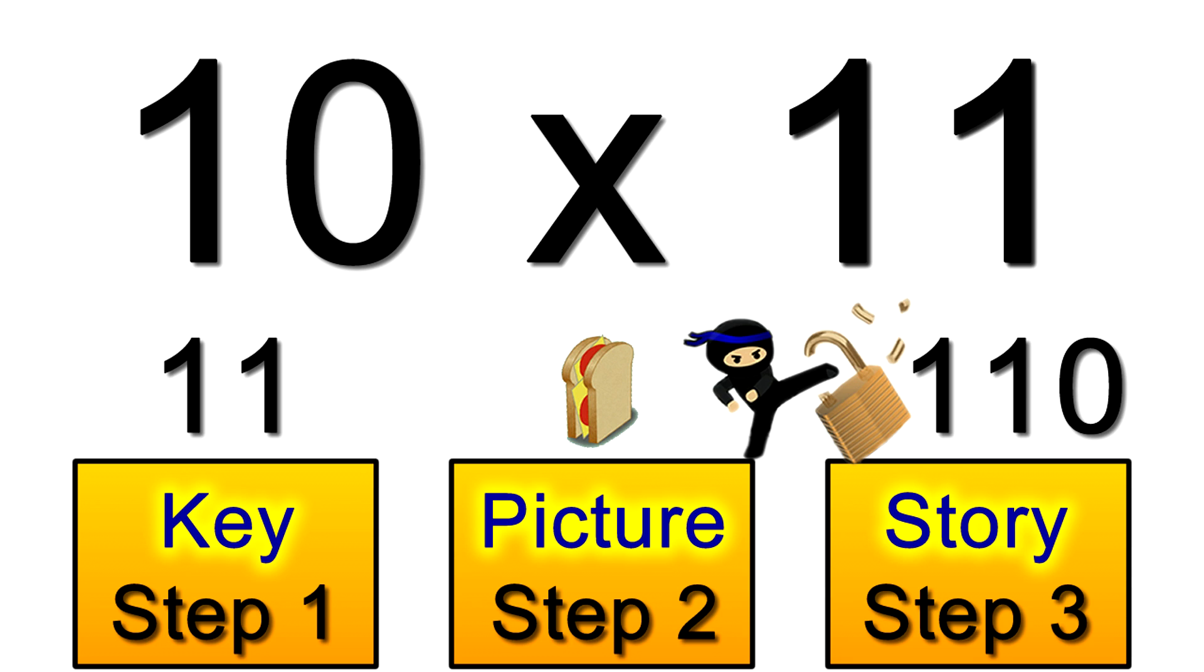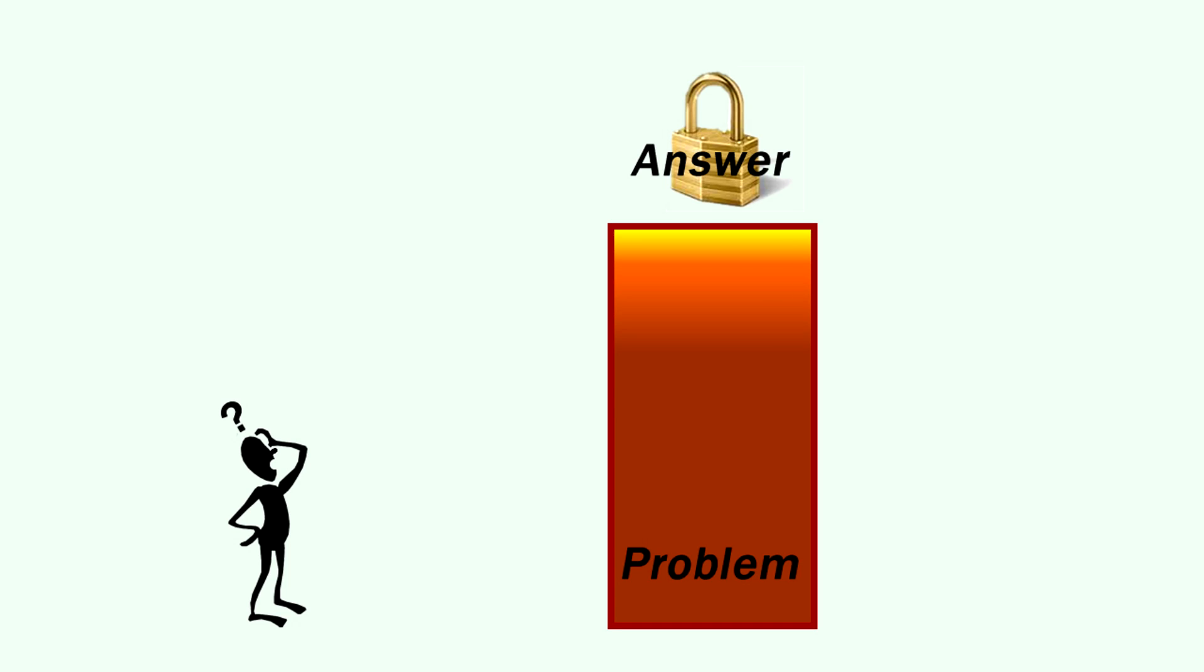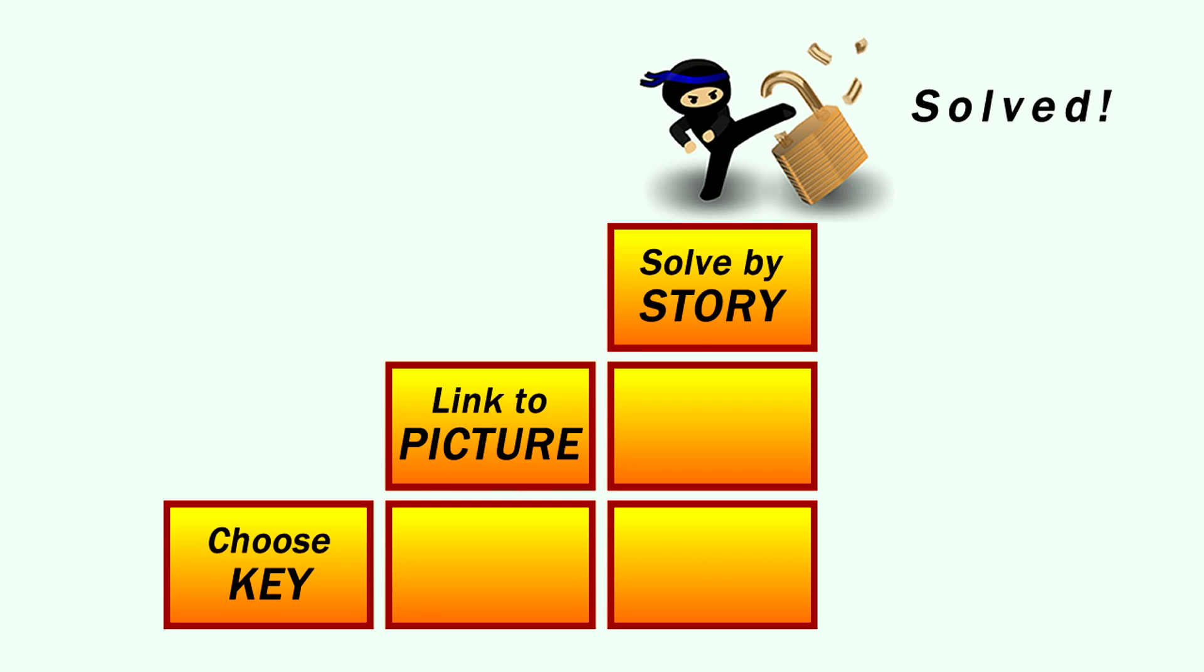Now we've looked at the tens and elevens just so you can see how my system works. And it's just as easy to use this system with those so-called harder tables too like the sixes sevens and eights which we'll be looking at next. But before I move on to those I want you to fully grasp how these three simple steps make my system unique.